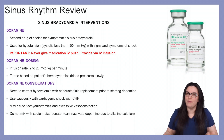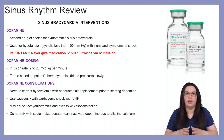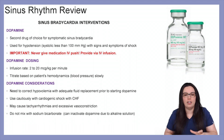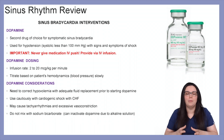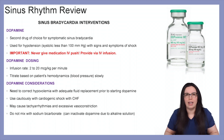Dopamine dosing rates will initially be between 2 to 20 micrograms per kilogram per minute, and we titrate based on the patient's hemodynamics and blood pressure. Normally we're looking for a systolic rate of greater than 90.